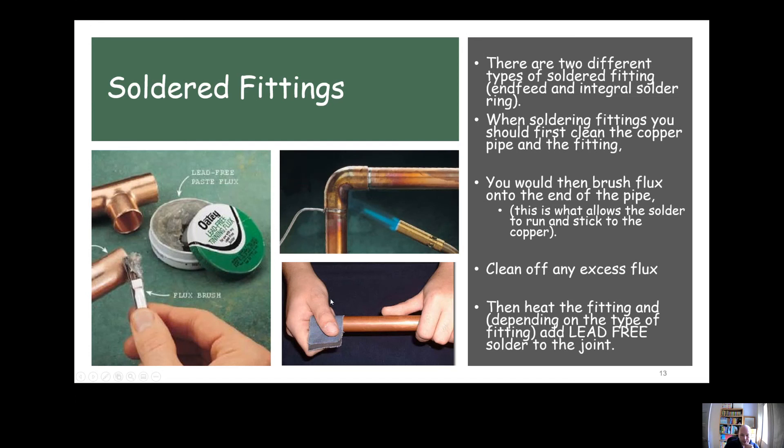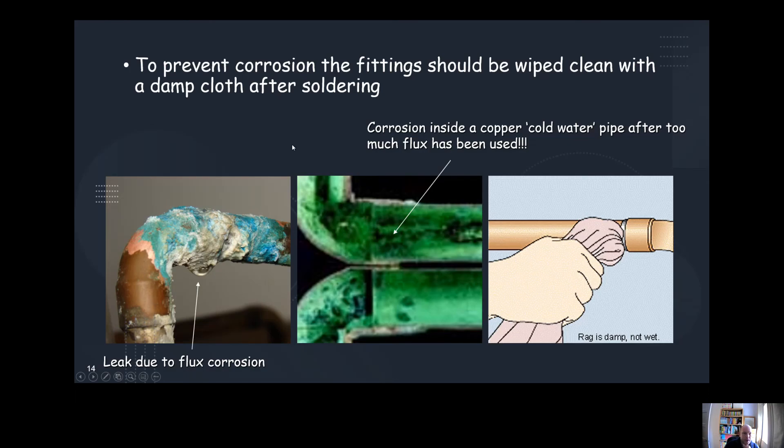Clean off any excess flux so it's not running down the pipe, and then heat the fitting up using a blowtorch. If it's an end feed fitting, you'd need to add solder to it like you can see in this picture here. If it's an integral solder ring fitting, you would just heat it until you see that band of solder drop out of the solder that's already been integrated into the fitting. After you've finished, make sure you give it a wipe to remove any excess flux. The flux is there essentially to stop the pipe from oxidizing during the process, which allows the solder to be pulled in and stick to the surface. But the flux is corrosive, so if you leave it on the pipe for a long period, it can cause corrosion.